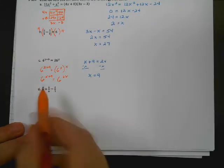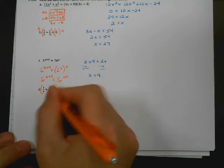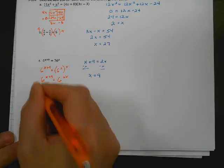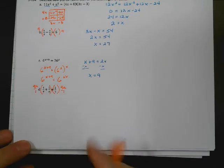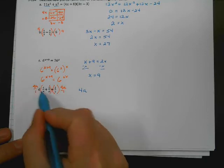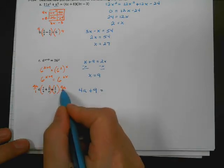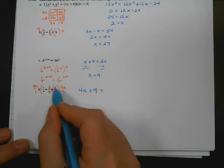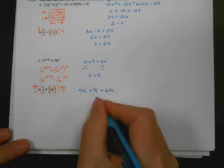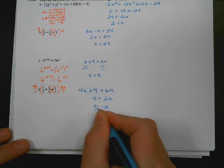Next one: I want to get rid of these fractions with denominators 9a and 3. The smallest number all three go into evenly is 9a, so I multiply both sides by 9a. Nine goes into 9, leaving a times 4, which is 4a. The a's cancel in 9a, leaving 9 times 1, which is 9. Three goes into 9 three times, leaving 3a times 2, which is 6a. Subtracting 4a from both sides gives 9 equals 2a, so a equals 9 over 2, or 4.5.